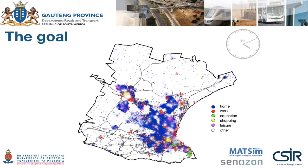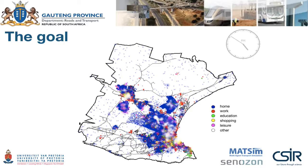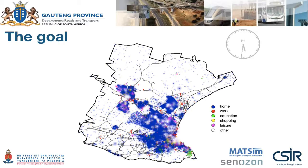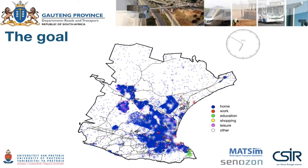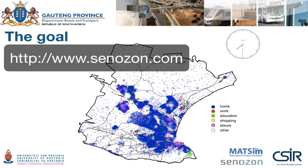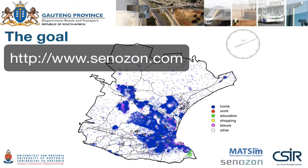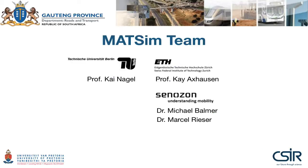By the way, these animations are generated using VIA, a visualizer specifically developed for MATSIM results. It is a commercial product developed by Dr. Marcel Rieser and Dr. Michael Balmer from Senozon, a spin-off company from the Swiss Federal Institute of Technology, or ETH, in Zurich, Switzerland. Do check out their website to see what amazing analyses you can do with MATSIM results. Speaking of which, who is MATSIM, and who is behind MATSIM?